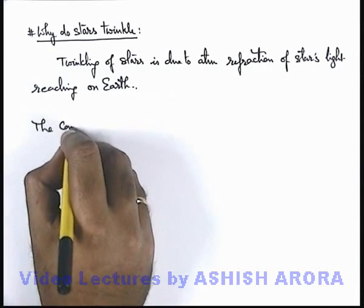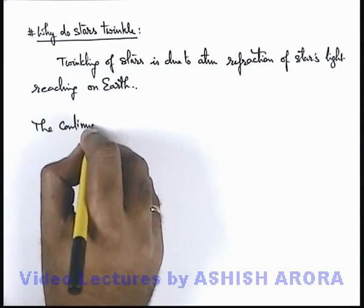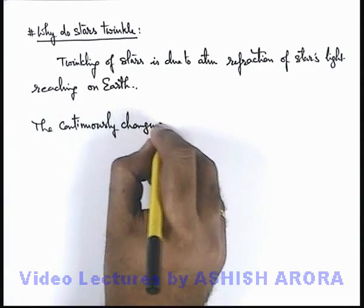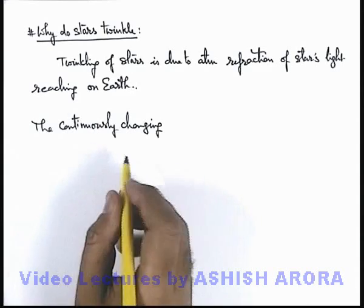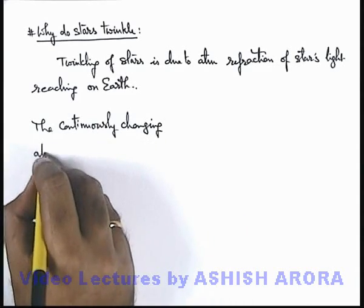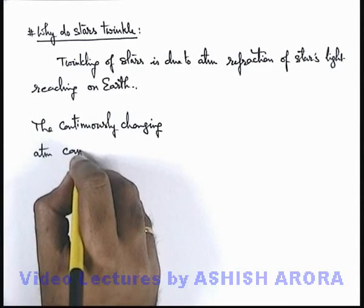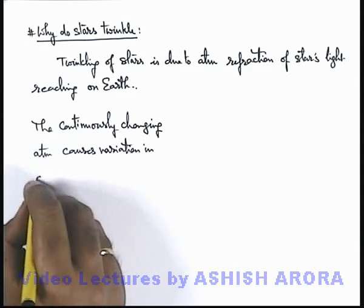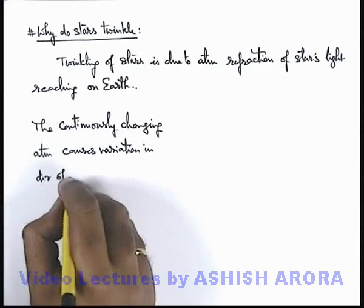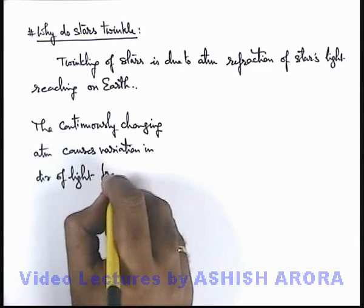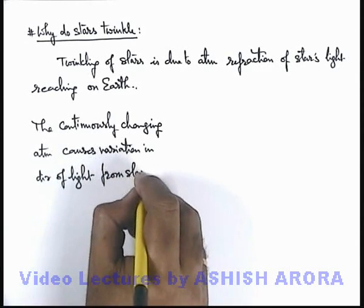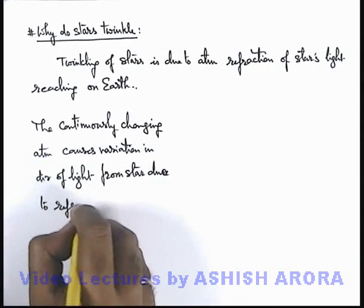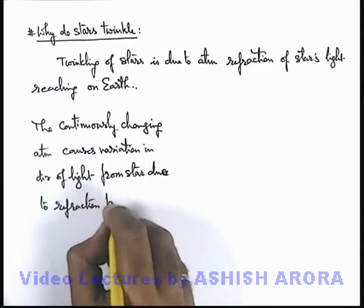The continuously changing atmosphere — here the meaning of continuously changing atmosphere is the turbulence and variation in sudden temperature in the atmosphere. This causes variation in the direction of light from the star due to refraction by atmospheric layers.